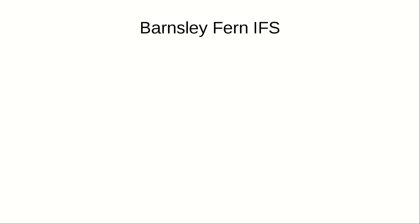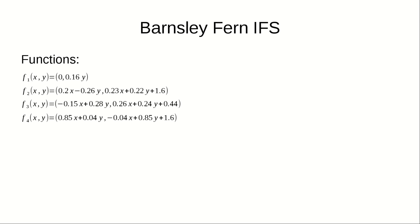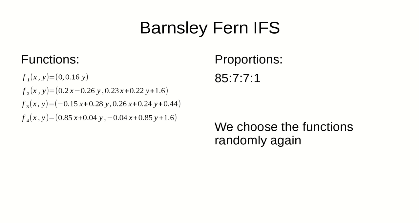Now we can focus on the last example: Barnsley Fern. In this case we have four iterated functions. Unlike the Sierpinski example, we have one extra requirement — we need to assign different probabilities to the functions, in proportions 85:7:7:1. We do this by choosing a random number from 0 to 100: rolling 0-1 selects function 1, 2-8 selects function 2, 9-15 selects function 3, and 16-100 selects function 4.